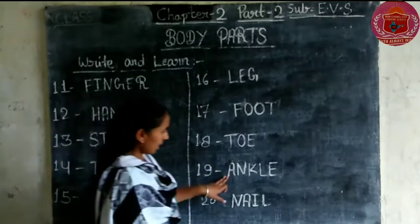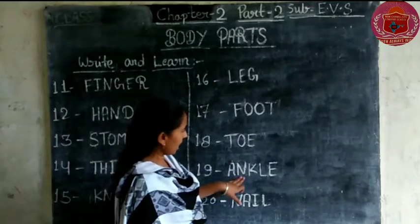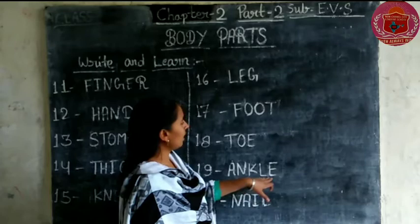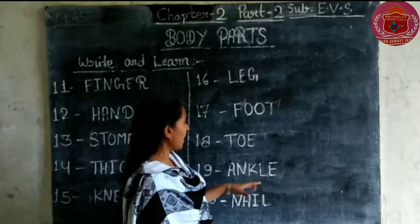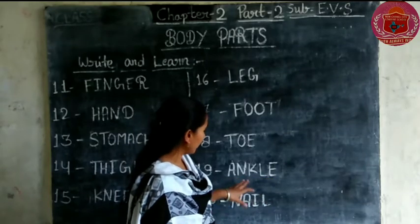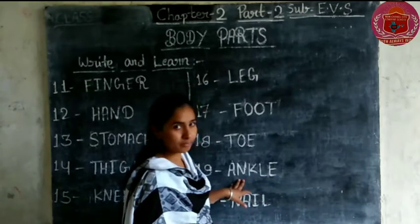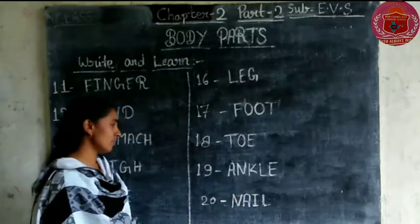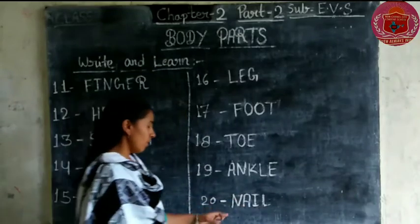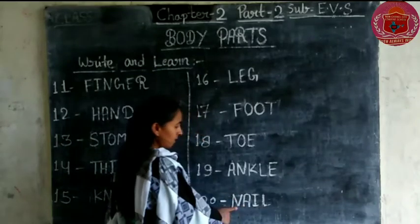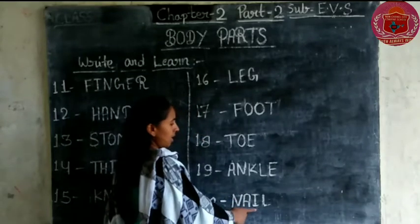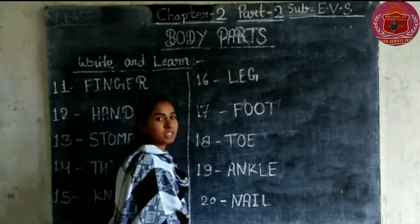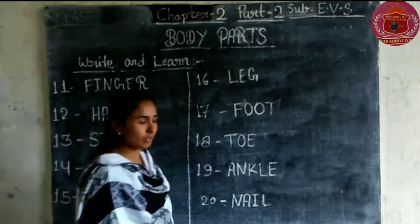Next is ankle. A-N-K-L-E. Ankle. The last is nail. N-A-I-L. Nail means nakho.